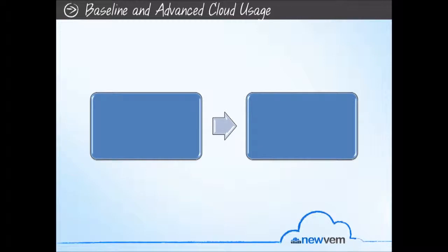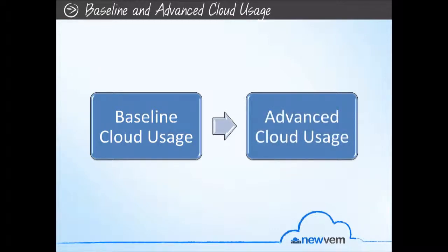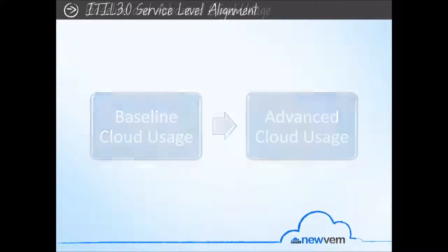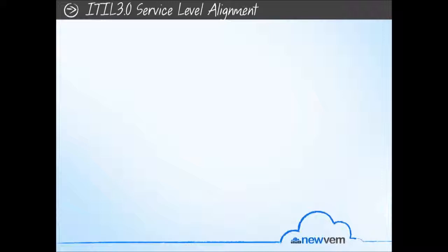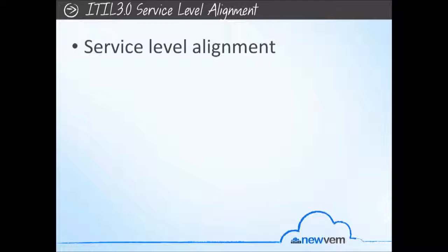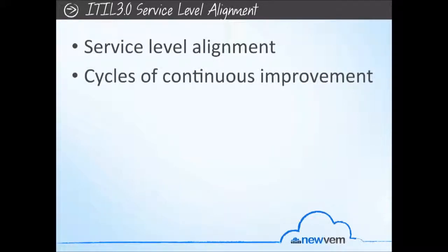NewVim can be thought of as broken into two usages: baseline cloud usage — blocking and tackling cloud operations to get a handle on using the cloud to meet operational IT needs — and advanced cloud usage, introducing cloud usage linked to ITIL 3.0. NewVim advanced cloud usage ties cloud usage to ITIL 3.0. The key areas are service level alignment, business service level mapped to IT service delivery, and cycles of continuous service improvement centered around business KPIs.